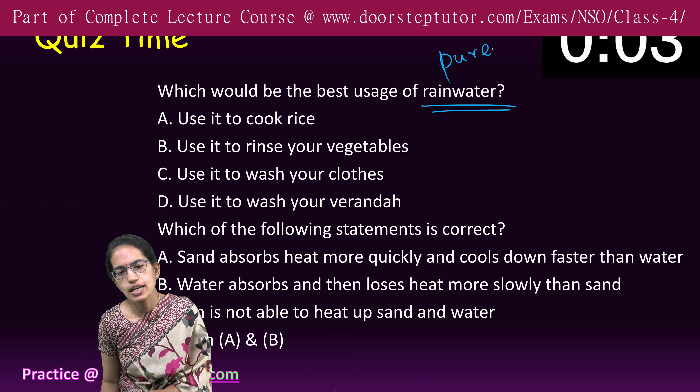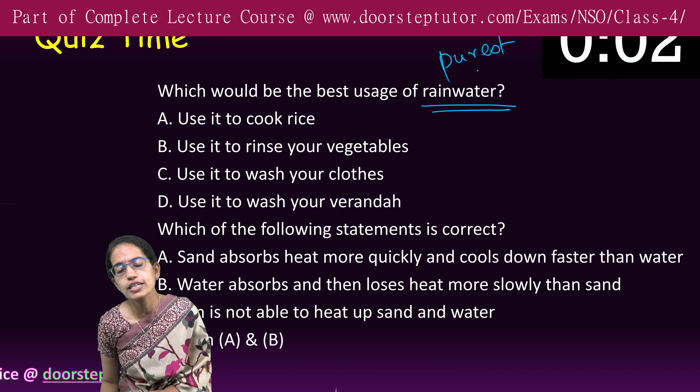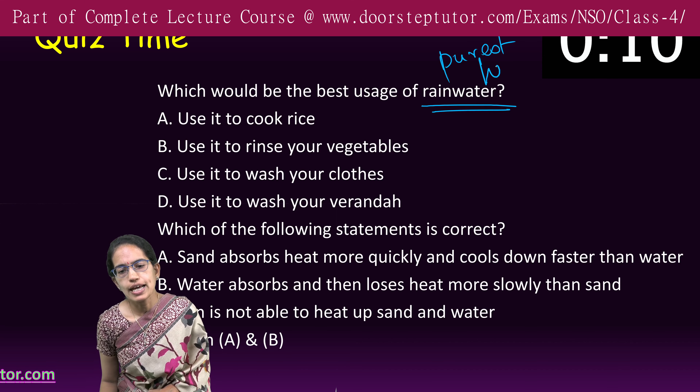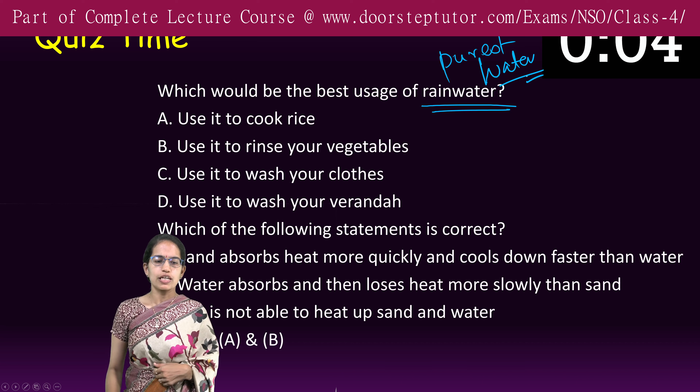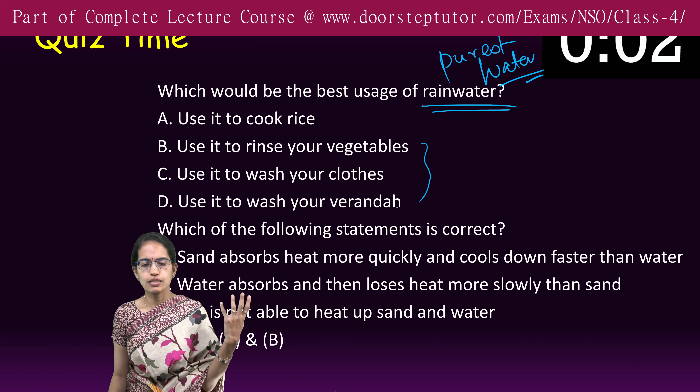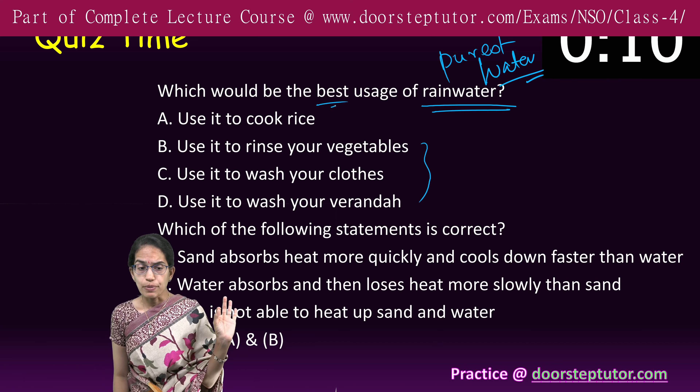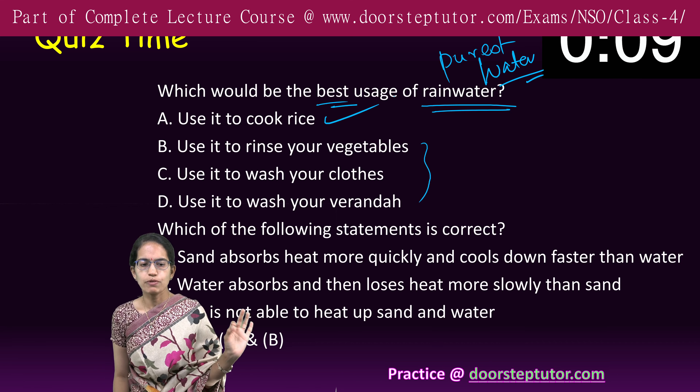Rainwater is considered the purest form of water. It can be used for cooking, washing, cleaning, and rinsing vegetables, but the best usage is for cooking because it is the purest. It comes directly from the condensation of water in the presence of the sun, and therefore it is the most pure form of water.